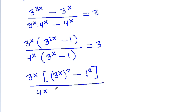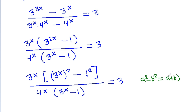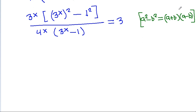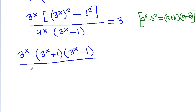We have 3^x times (3^(2x) - 1) in the numerator. Using the difference of squares, a² - b² = (a - b)(a + b), this becomes 3^x times (3^x - 1)(3^x + 1), divided by 4^x times (3^x - 1), equal to 3.